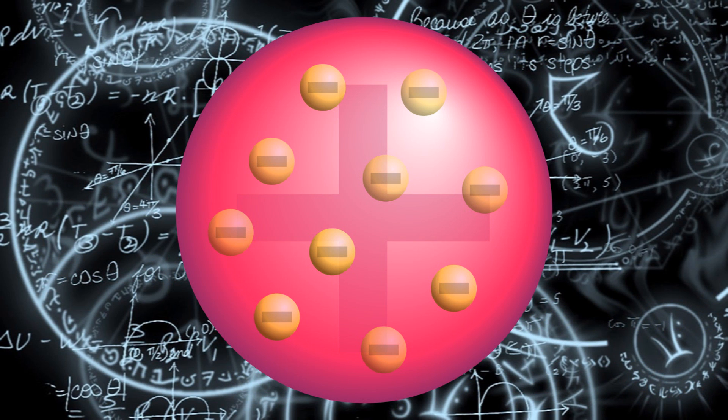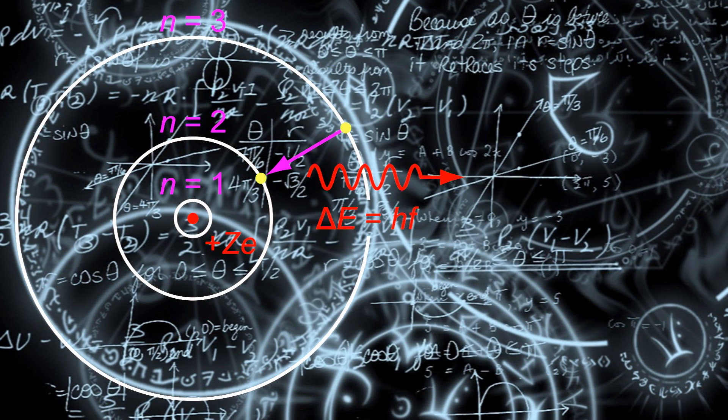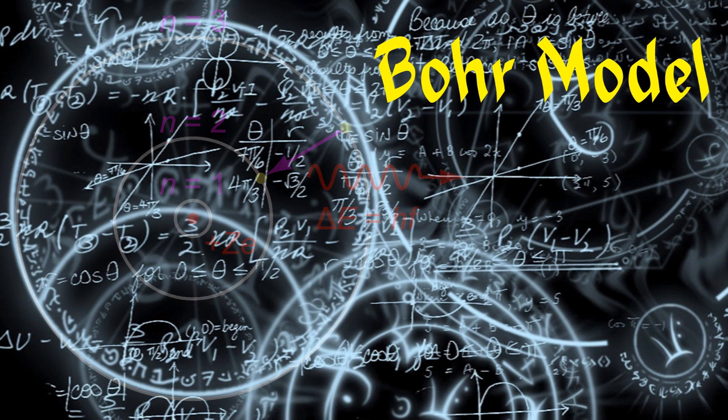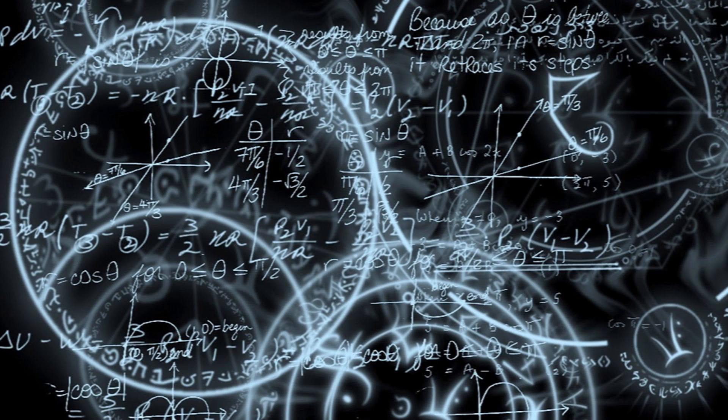But there was still a far way to go. We then reached the next model, the Bohr model. It depicts the atom as a small, positively charged nucleus surrounded by electrons that travel in circular orbits around the nucleus. Of course, this was just a tad off too.